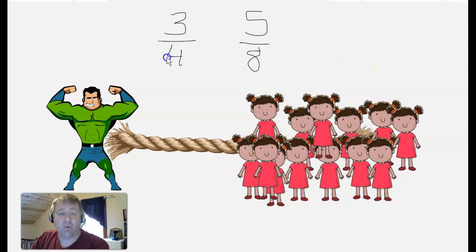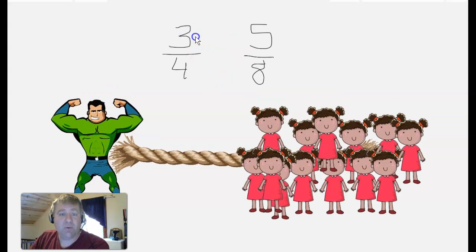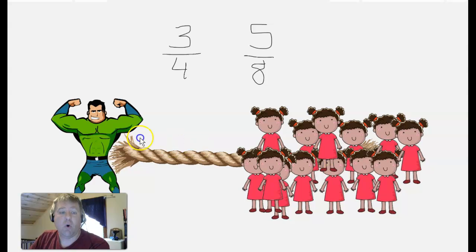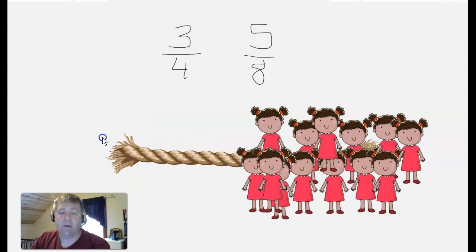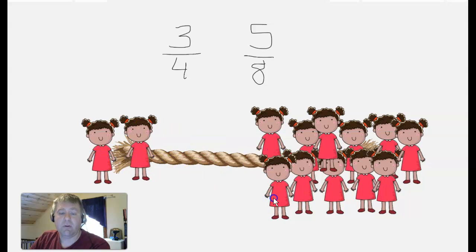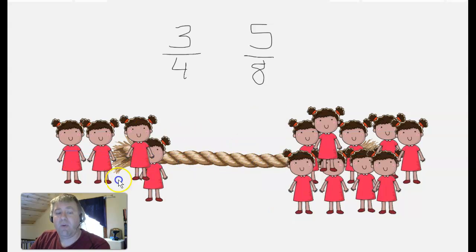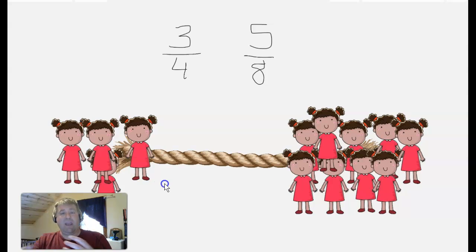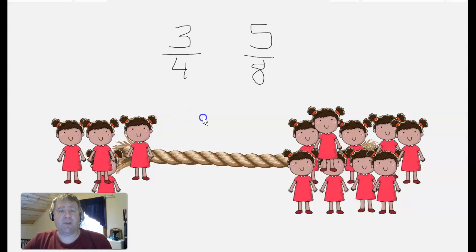So it is not enough to only look at the denominators, and it's not enough to only look at the numerators. We need to replace something — make them the same. If we can make them the same, now we can compare them and know who's going to win. This is where the concept of equivalent fractions comes into play.